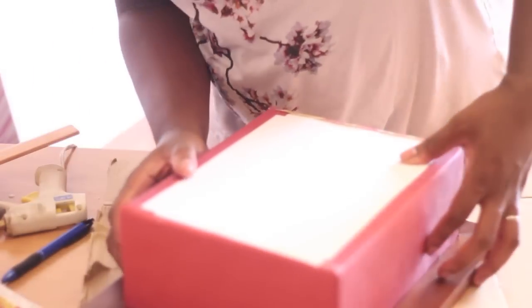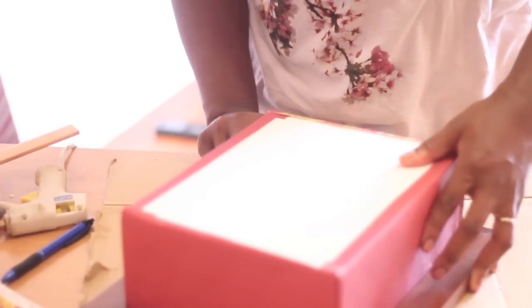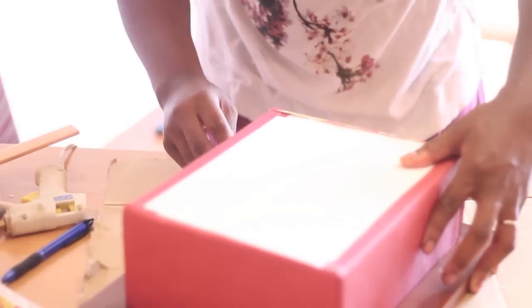Depending on how heavy the items inside of your shadow box are, as well as how secure you feel this needs to be, you can go over it with the glue gun and really get it in there.